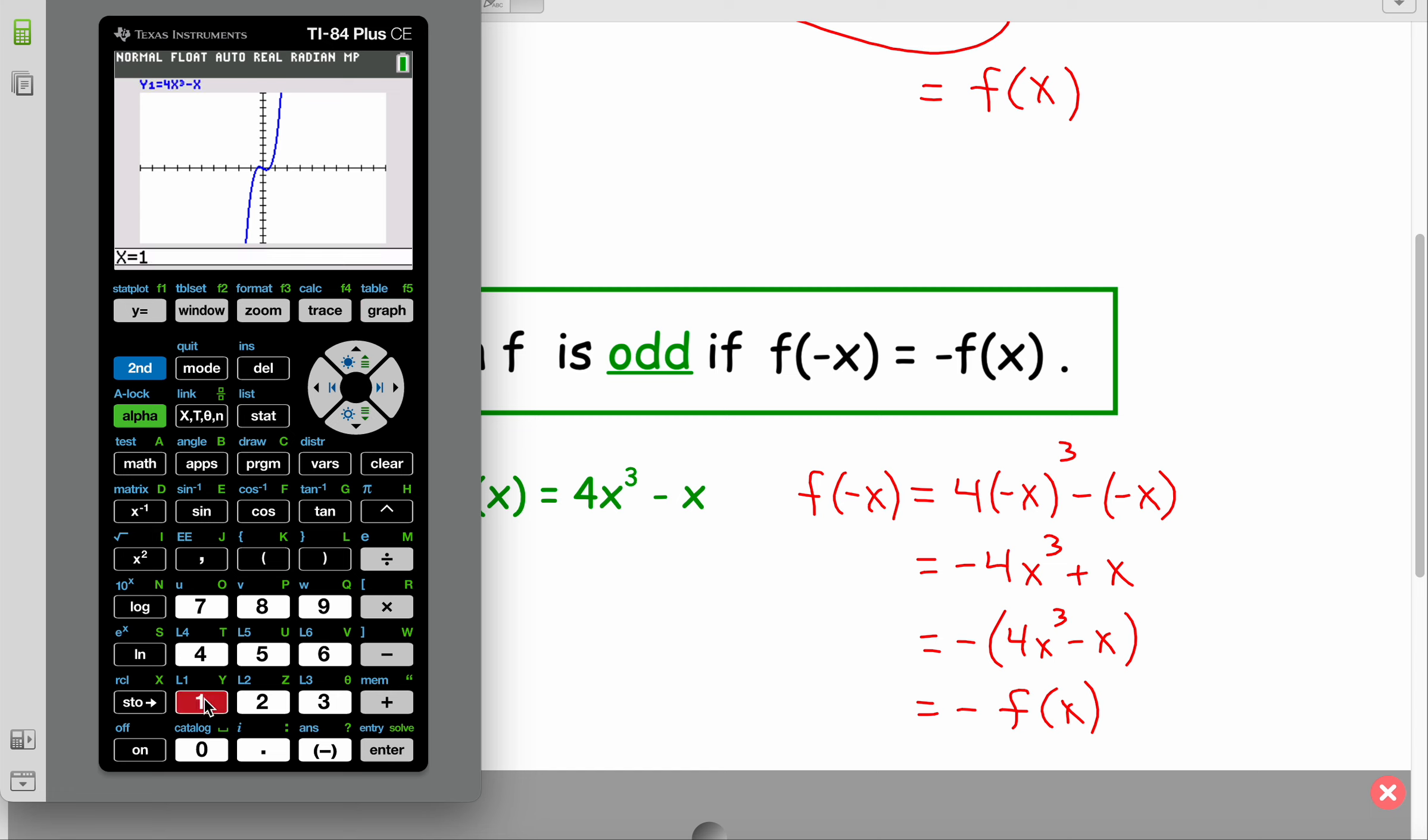So when x is 1, it jumps up to 3. When x is negative 1, it jumps down to negative 3. When x is 2, for example, it jumps way up to 30. When x is negative 2, it'll go way down to negative 30. So that's symmetry about the origin.